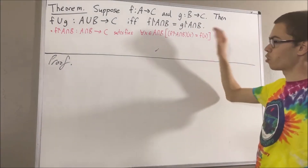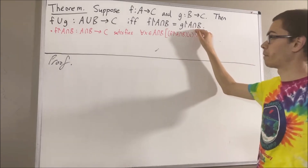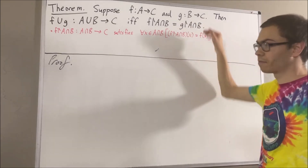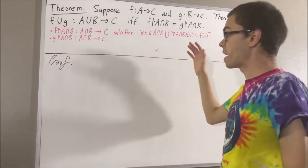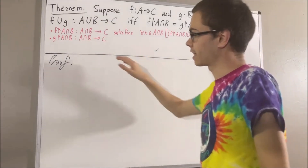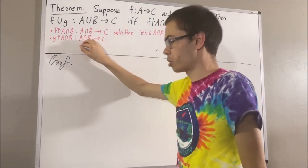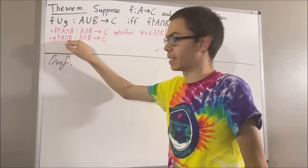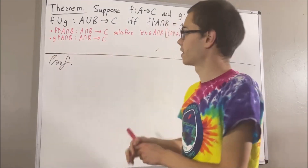Similarly, the restriction of g to A∩B is a function from A∩B to C, and it satisfies: for all x in A∩B, the restriction of g to A∩B evaluated at x is equal to g of x.